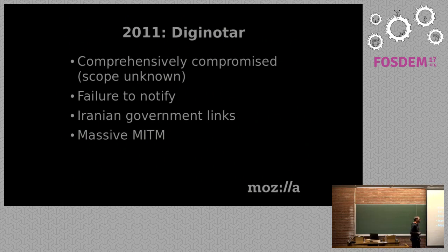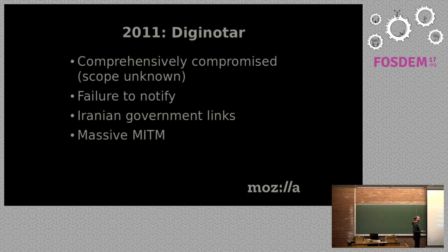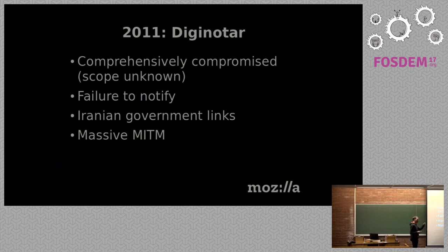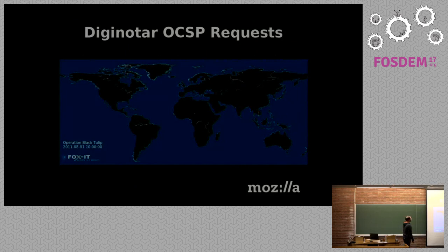Also in 2011 came a very famous incident: a Dutch CA called DigiNotar was comprehensively compromised by someone working for the Iranian government. The scope was massive and unknown. They completely failed to notify any root programs and instead tried to revoke the dodgy certificates they found and cover it up. In fact, certificates issued from DigiNotar's roots were used to man-in-the-middle people in Iran. A forensics company produced a video showing OCSP request logs geolocated by IP address to reveal where the certificate was being used.